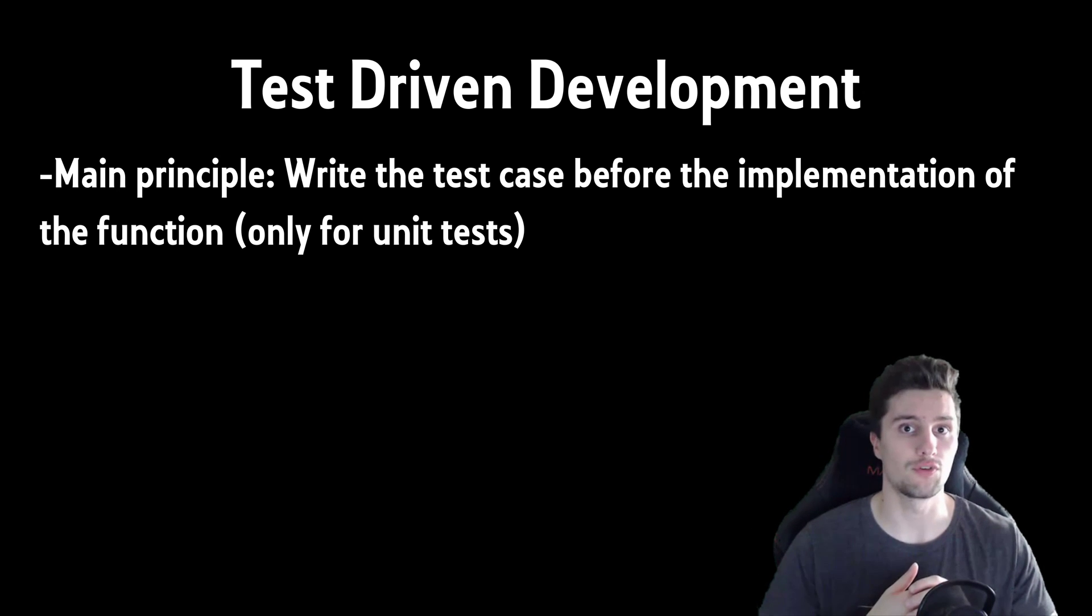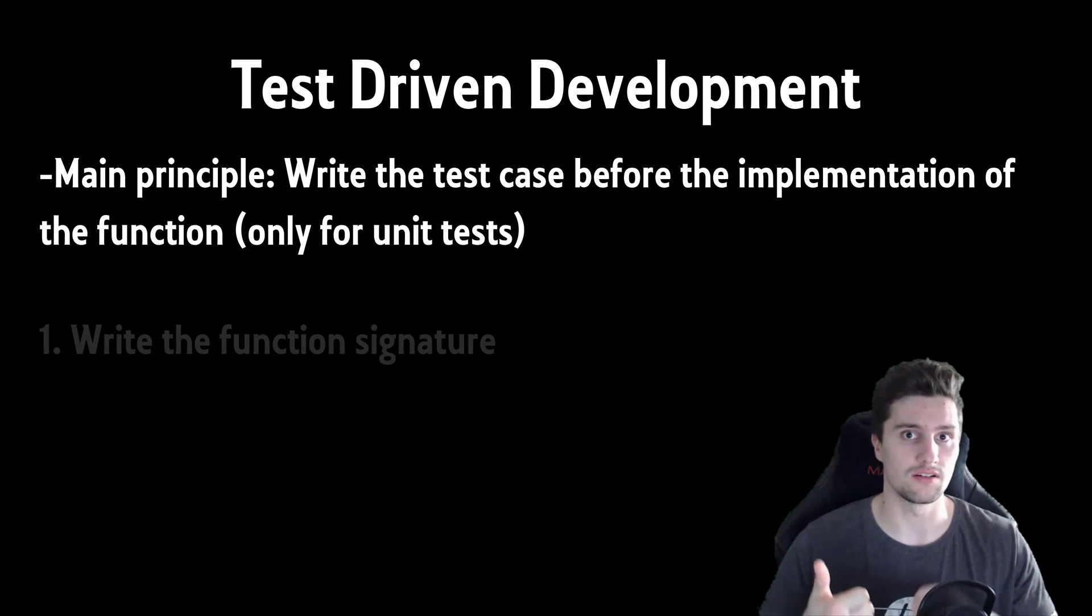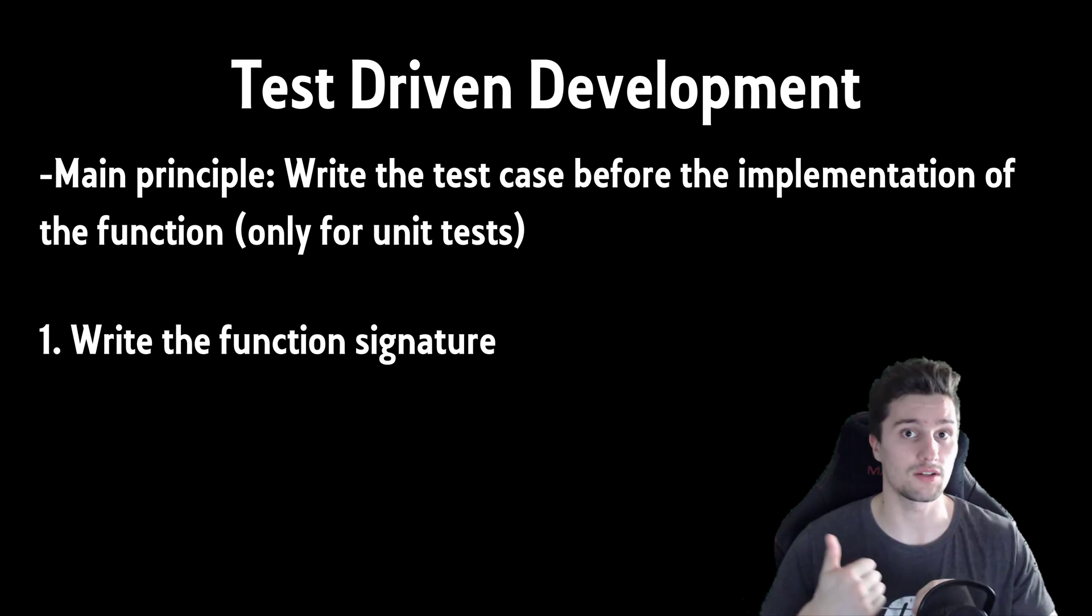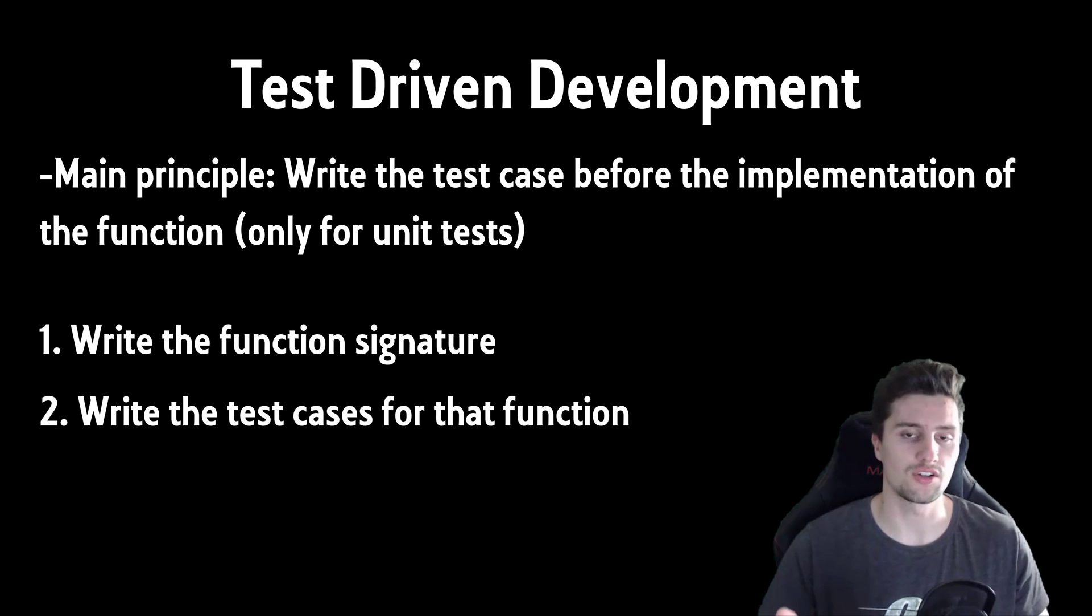We only do this for unit tests, not for integration or UI tests. The flow is basically always the same: we first think about the function signature and define the function signature but no content of that function yet. Then the second step is to write the test case that should test the function.